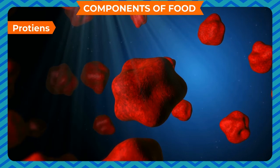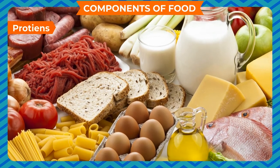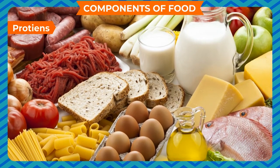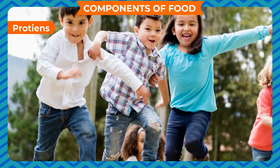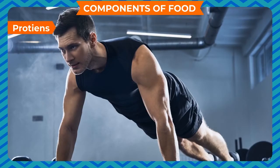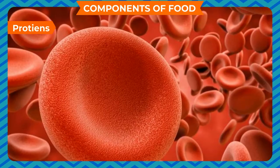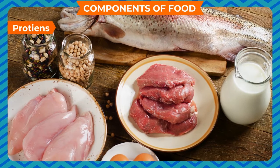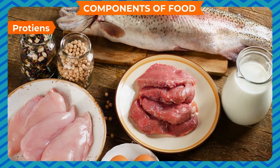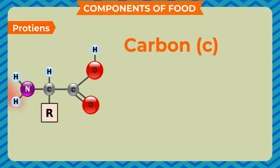Our body is made up of billions of cells, and these cells are mainly made up of proteins. Children require more proteins compared to adults for the growth of their body. Our body also needs proteins to repair and replace damaged cells. Because of this, our diet should be rich in proteins. Proteins are compounds of carbon, hydrogen, nitrogen, and oxygen.